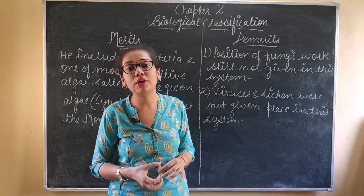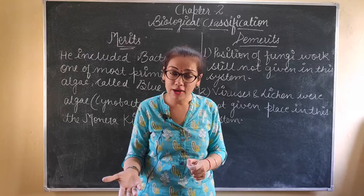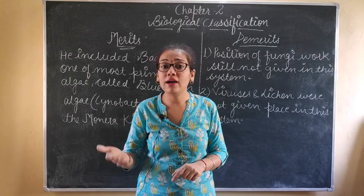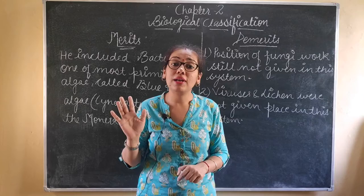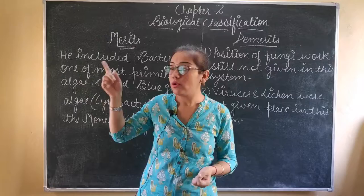Because of these drawbacks, the four-kingdom classification was also rejected. With so many organisms to study, a new classification system was needed to make things easier. This led to the five-kingdom classification, which we will learn about in the next lecture. I hope you have understood the four-kingdom classification. If there is any problem or confusion, you can tell me in the comment box or send me a mail. Stay tuned, take care, thank you.